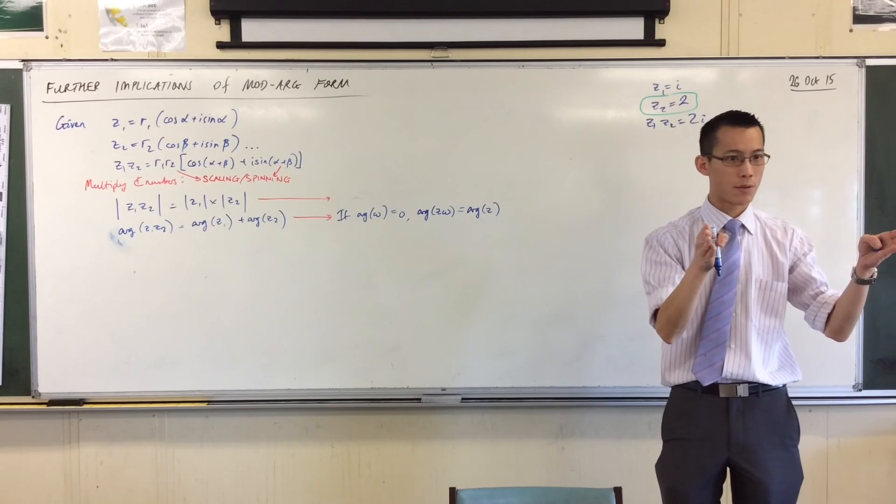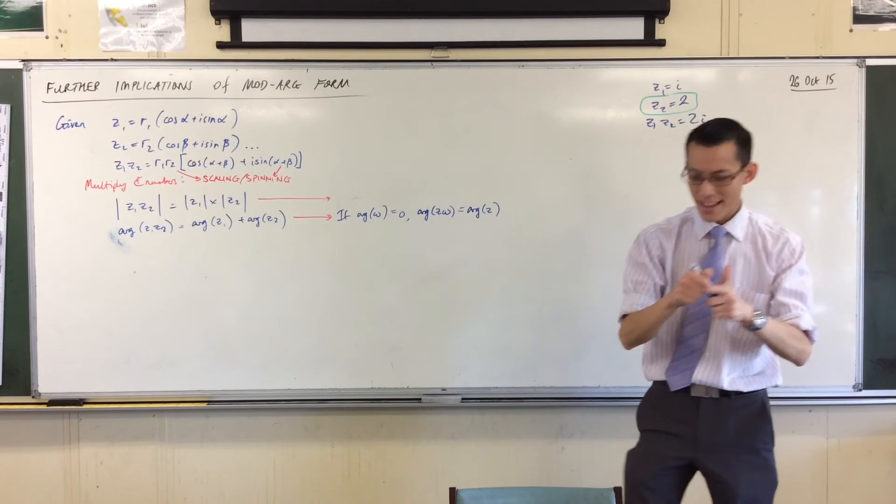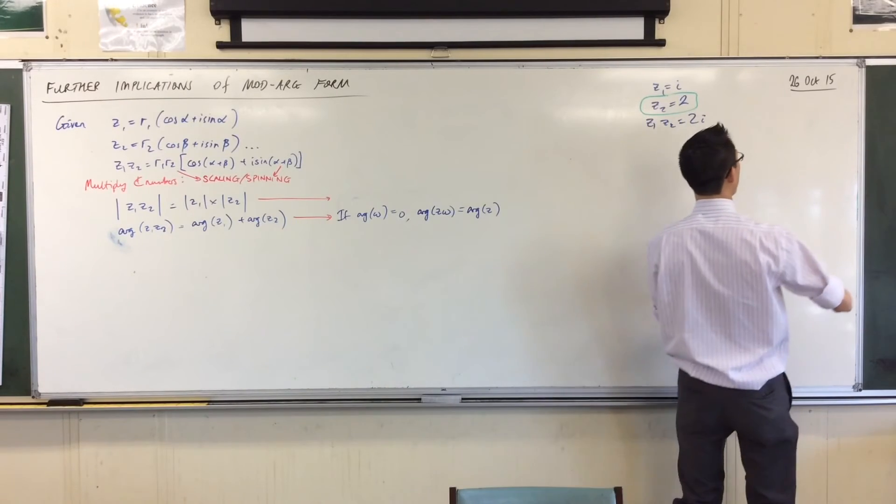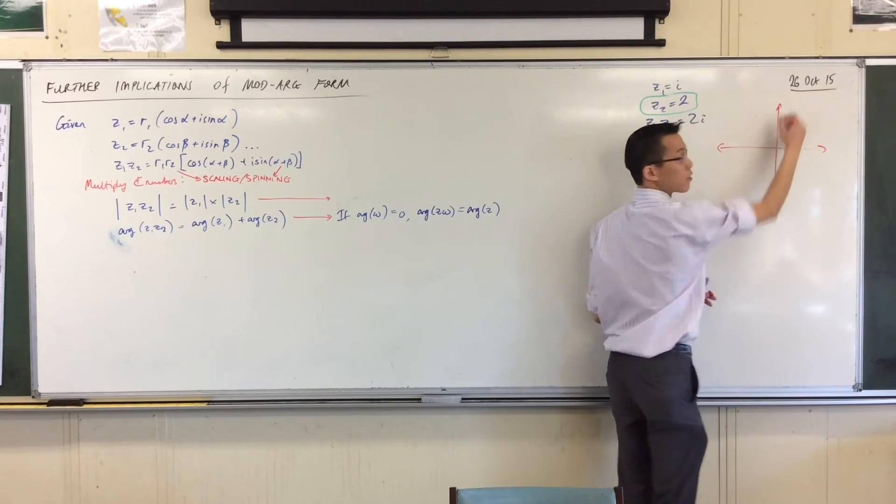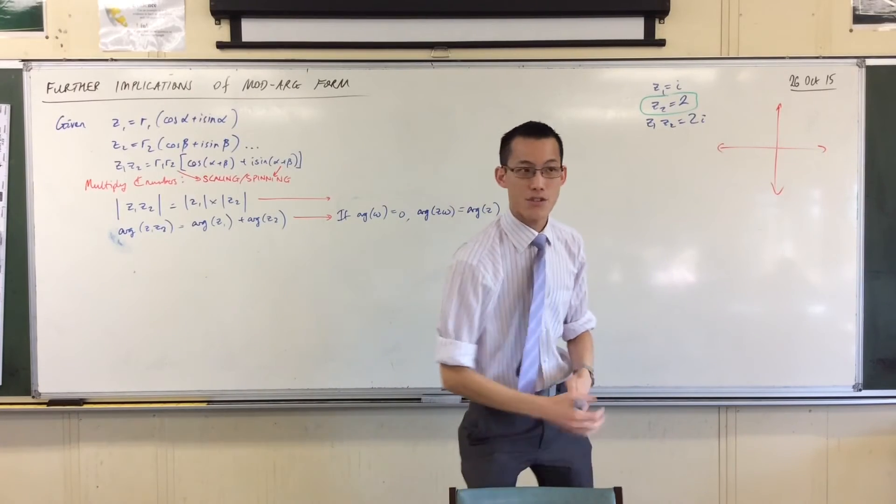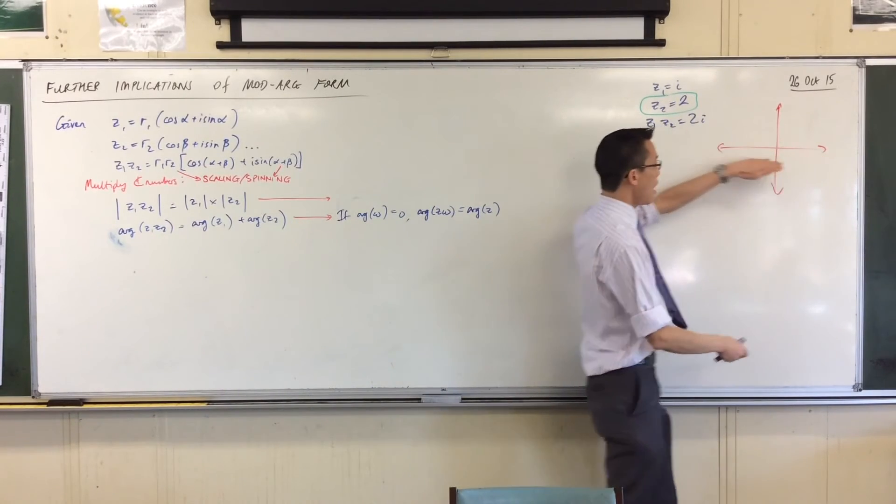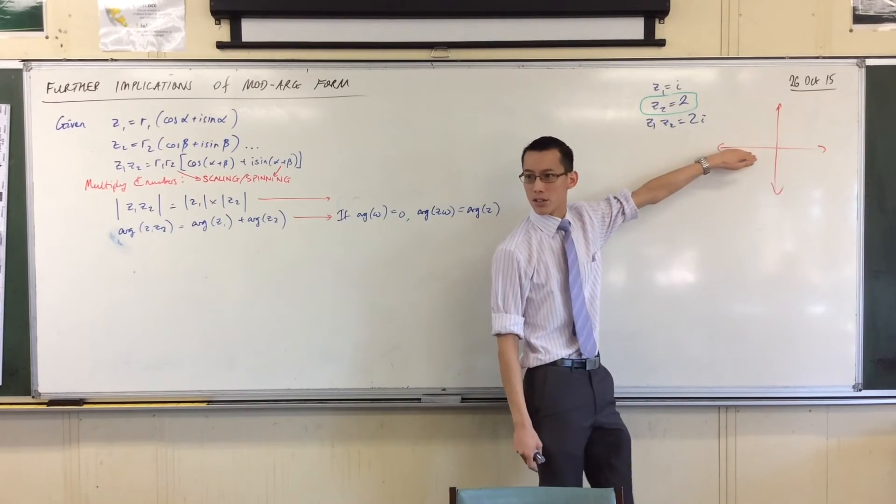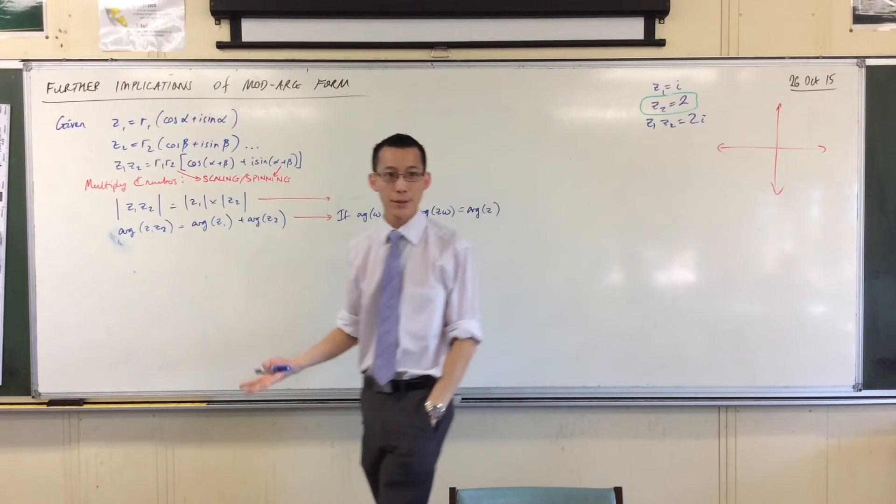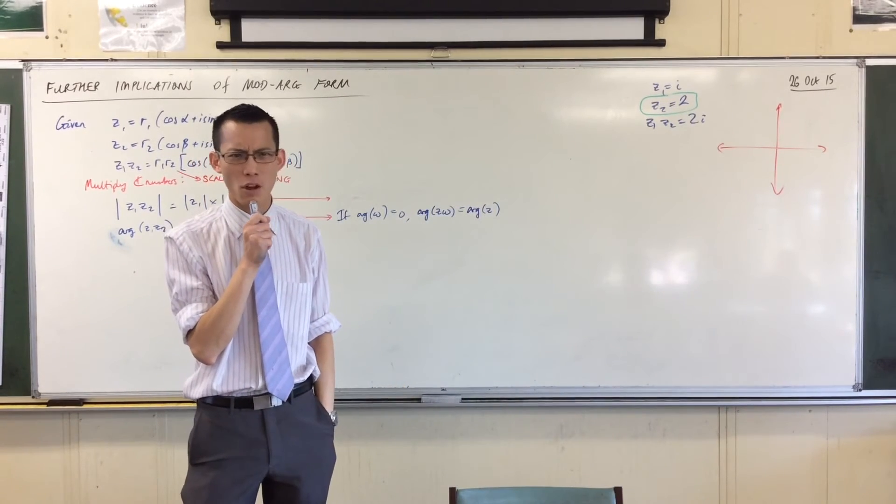Because if I think about my complex plane here, I start measuring from the positive real axis. These numbers over here, like minus one, minus two, minus three, they are also real, they're real numbers, but their argument's not zero. What is the argument over there? It's pi radians.